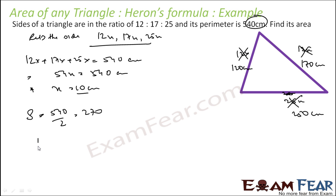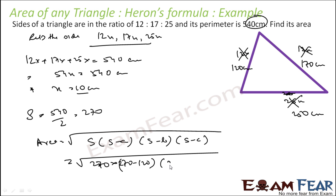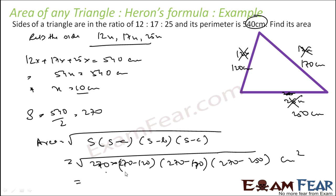The semi-perimeter is 540 / 2 = 270 cm. Area = root of s(s−a)(s−b)(s−c) = root of 270 × (270−120) × (270−170) × (270−250) = root of 270 × 150 × 100 × 20. Solving this gives 9000 centimeter square as the area.